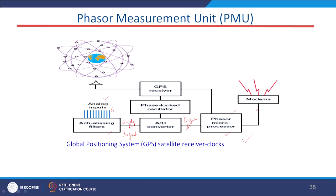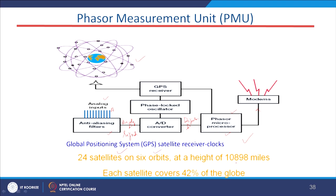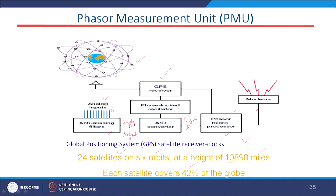The GPS component has 24 satellites on 6 orbits at a height of 10,898 miles; each satellite covers 42% of the globe. The GPS receiver receives satellite signals and supplies them to the phase-locked oscillator, which locks the sampling frequency according to the GPS receiver signal. One pulse per second (1 PPS) is received by the GPS receiver, which triggers the ADC to begin sampling the voltage and current signals.